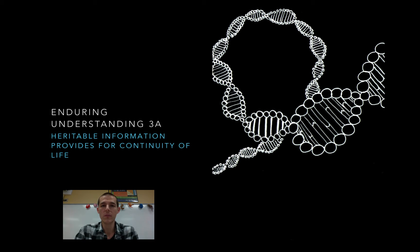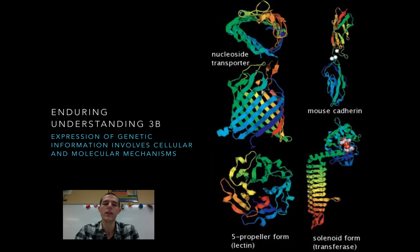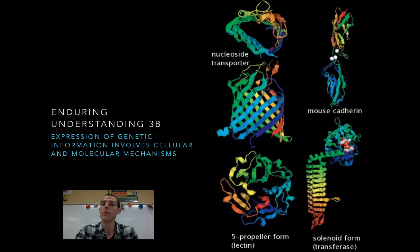Once we've talked about the molecular basis of heredity — the nuts and bolts that carry the information — we'll move on to Enduring Understanding 3b, which is that expression of genetic information involves cellular and molecular mechanisms. All the information that makes us us is coded in DNA, but that code is useless unless we can express the genes as proteins. All living cells have the same DNA, yet my skin cells and muscle cells are very different, so we'll discuss why and the mechanisms that control which genes are turned on and which are turned off.